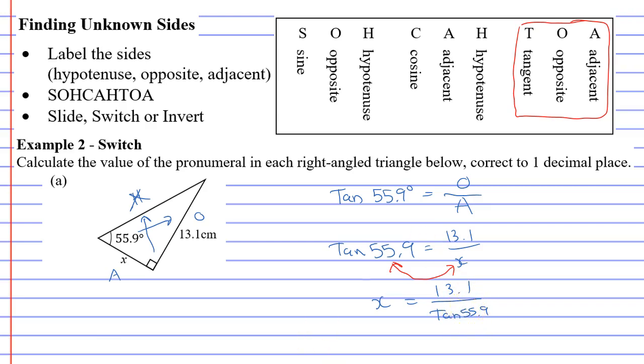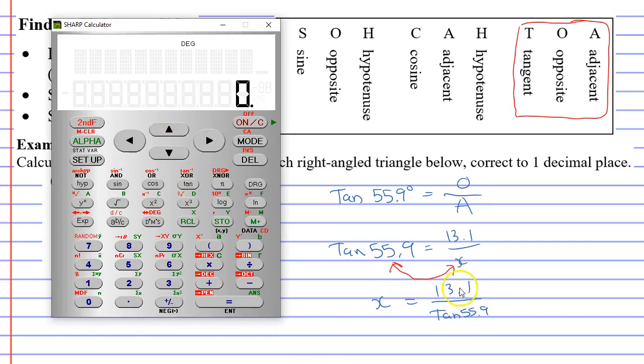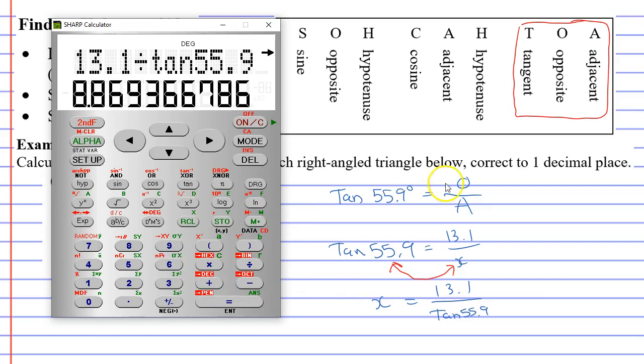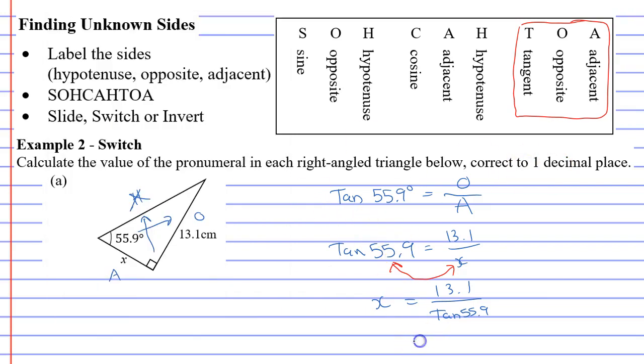And then we're going to grab our calculator, we're going to work it out. So because it's a fraction, we're just going to use divide. 13.1 divide tan 55.9. Tan 55.9 equals, and we want to do it to one decimal place, so we're going to give it 8.9. X equals 8.9. It's in centimetres, so 8.9 centimetres.